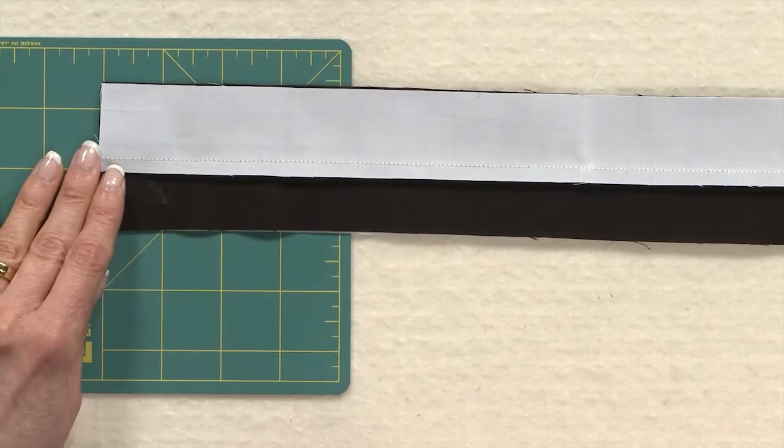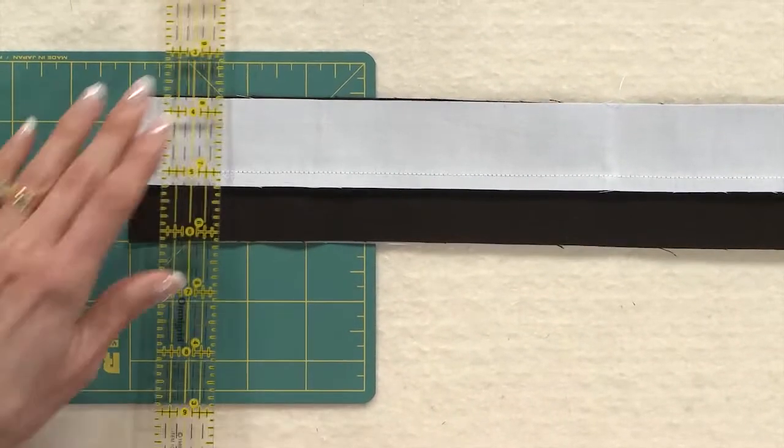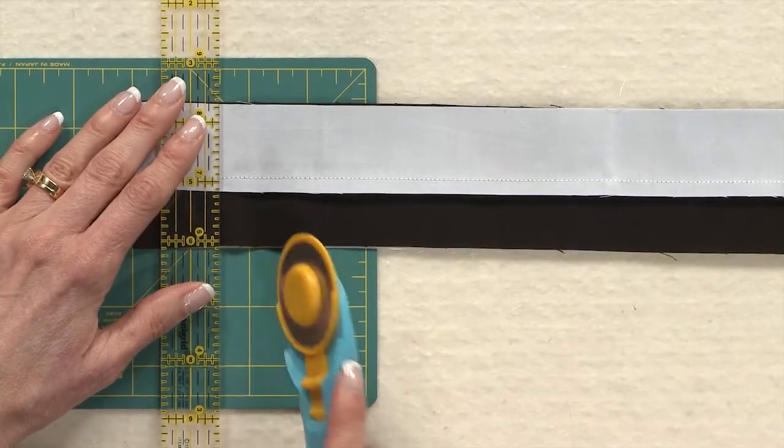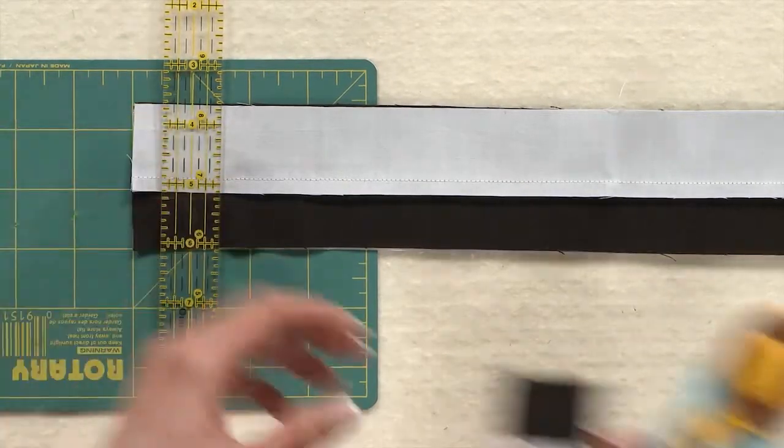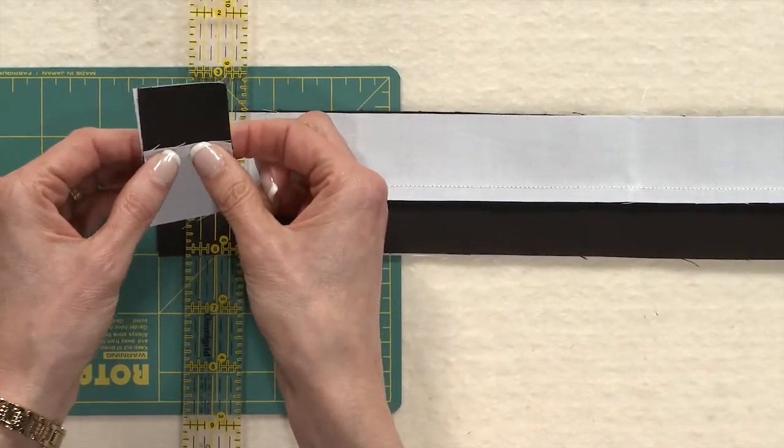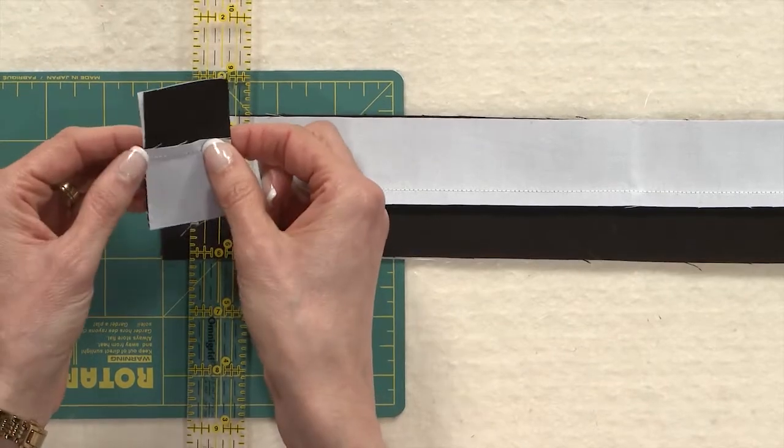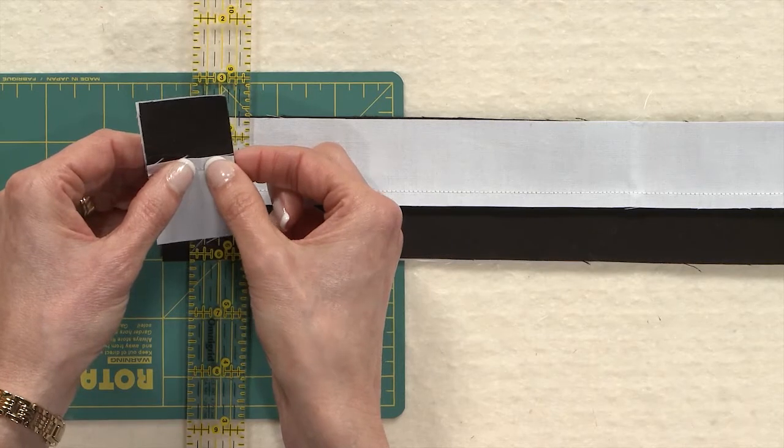And I'm going to line this up on my rotary cutting mat and I'm going to use a ruler to cut one and a half inch increments this way. And now I've got two units being cut at once and not only do you have two units cut at once, but they're already lined up and ready to take to your sewing machine to sew.